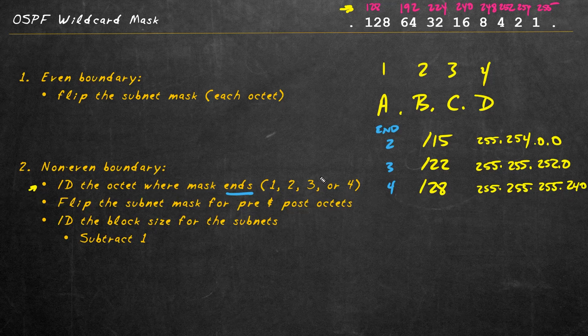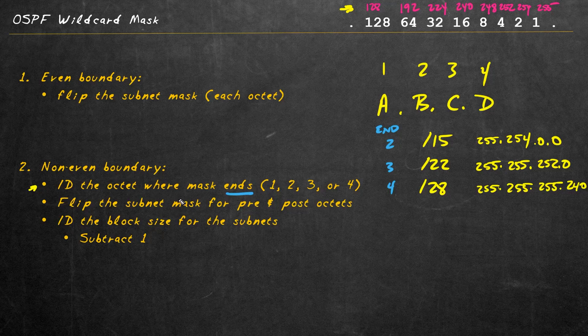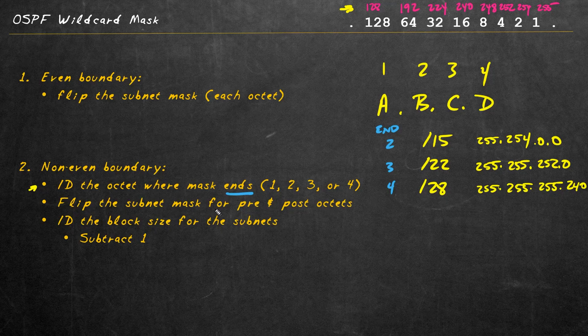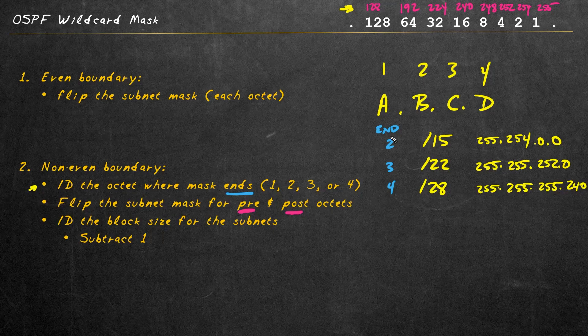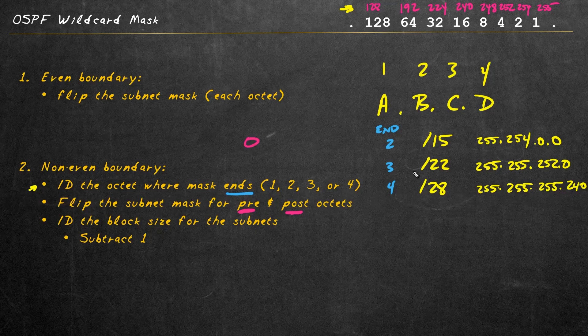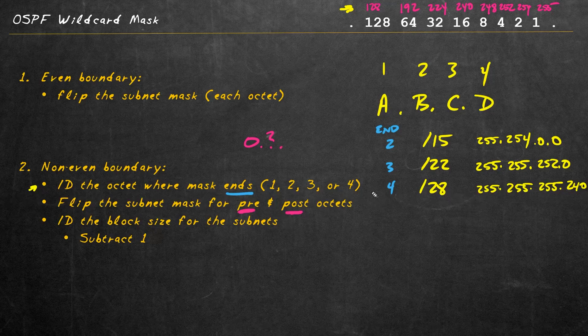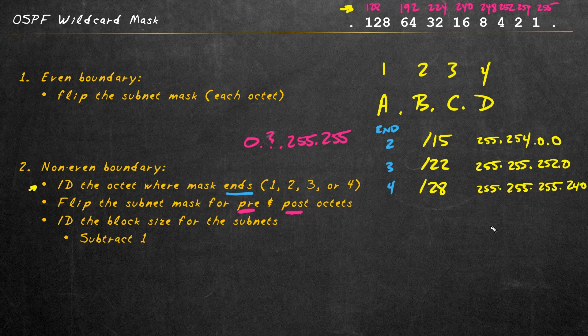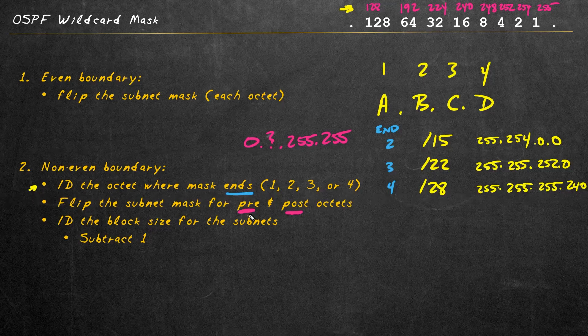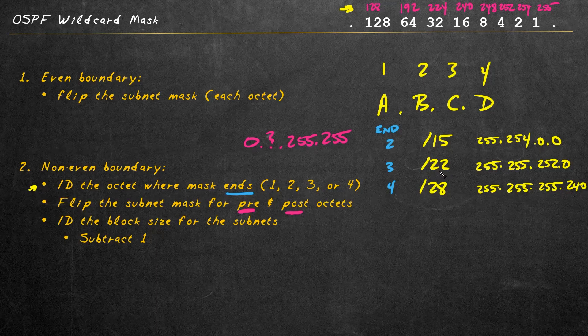After we identify the octet where it ends, which we just did - second, third, or fourth octet in these examples - the next step is just go ahead and flip or invert the subnet mask for anything before or after those octets. For the slash 15, the first octet, if it's a 255, we'd have a zero. Because the mask ends in that second octet, we'll put a question mark there for that second octet. Then everything after that, we'll flip those as well. The same thing for the slash 22, because the network is ending somewhere in the third octet, we'll take everything before or after that octet and flip it.